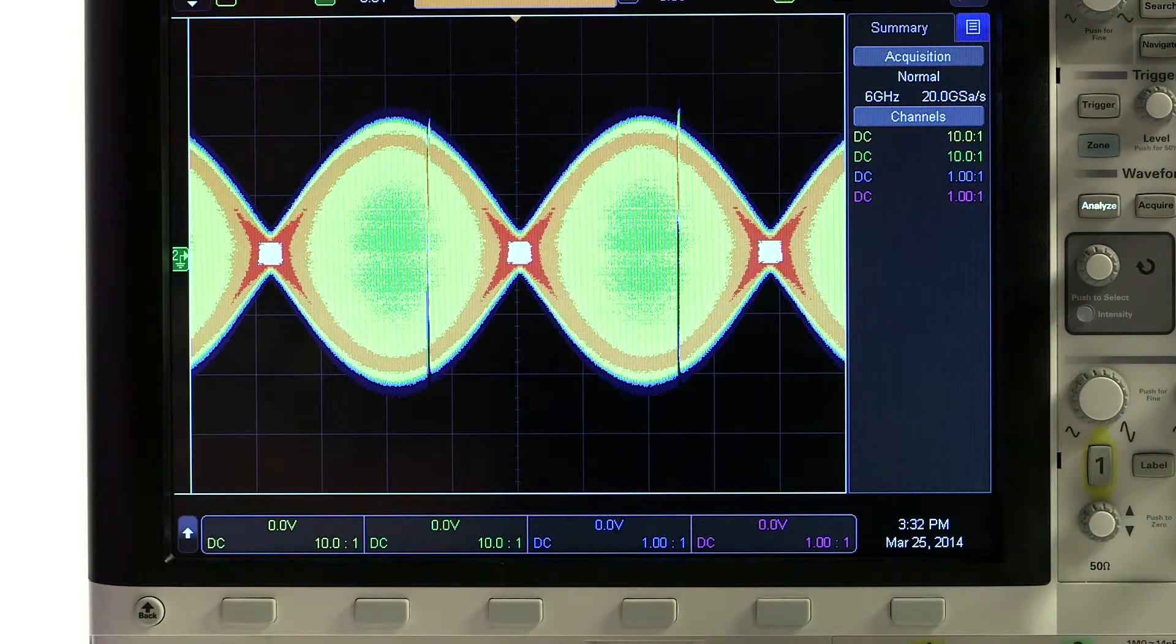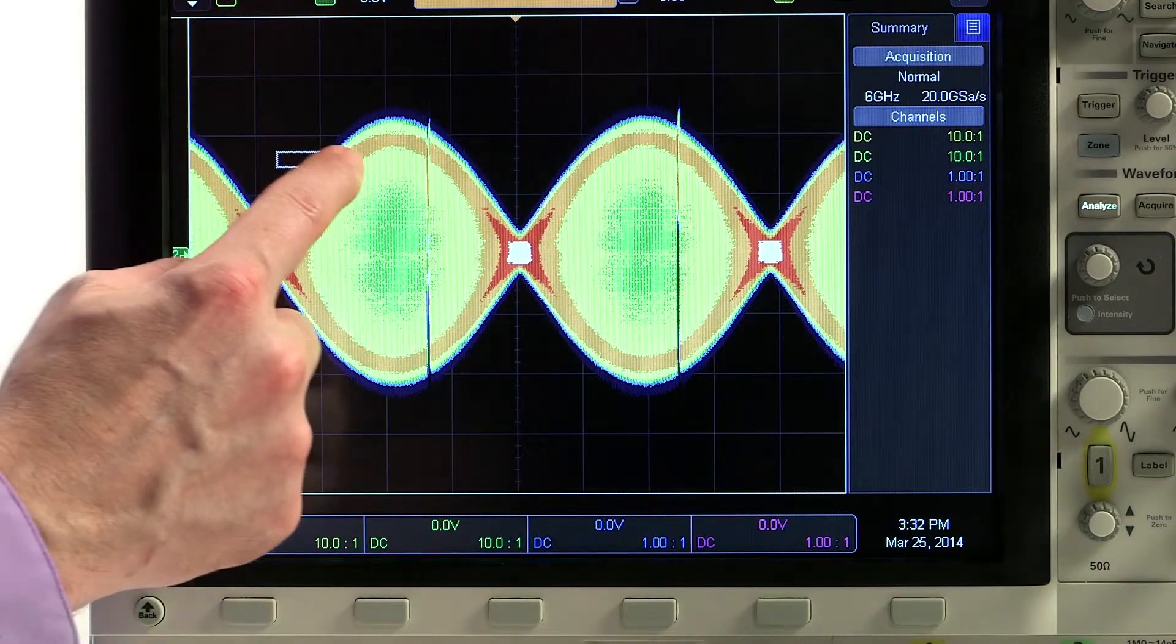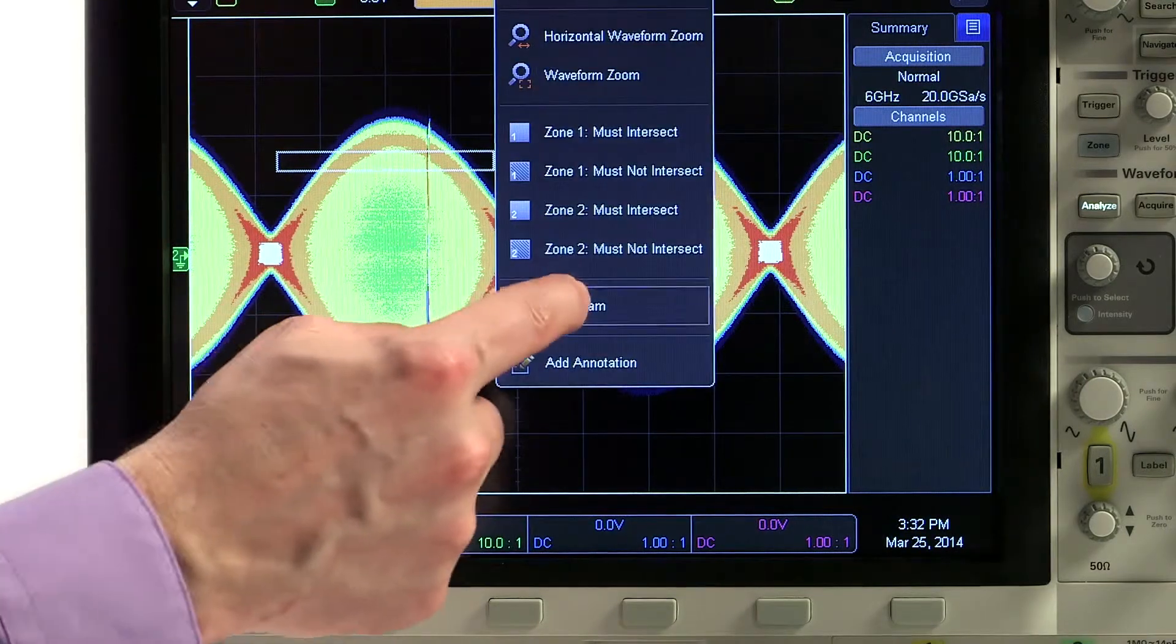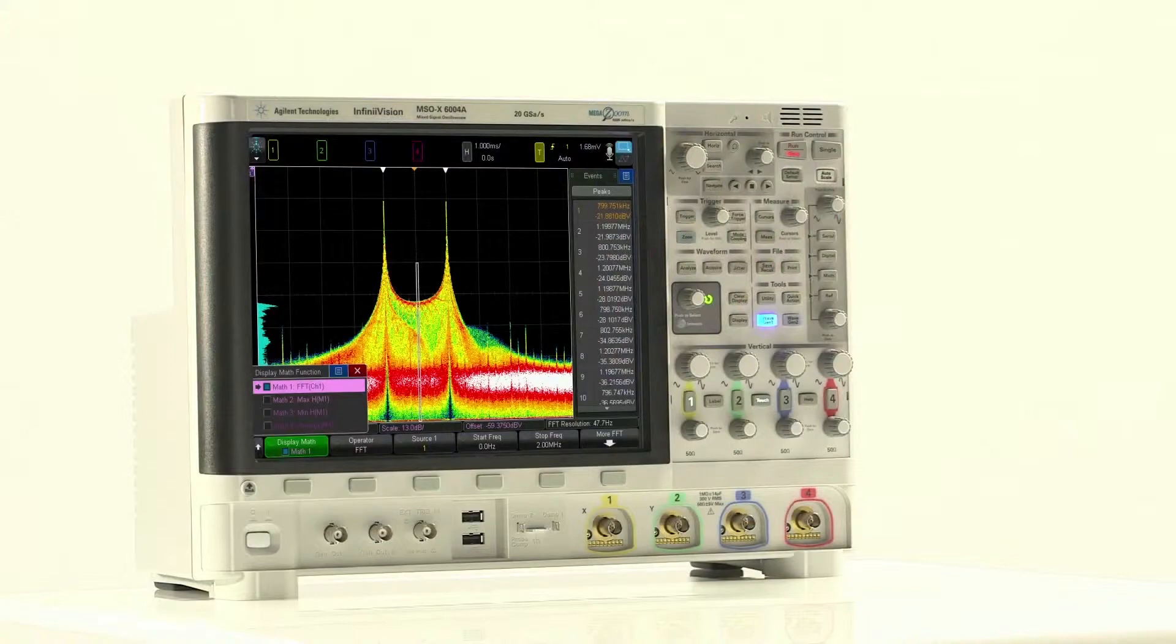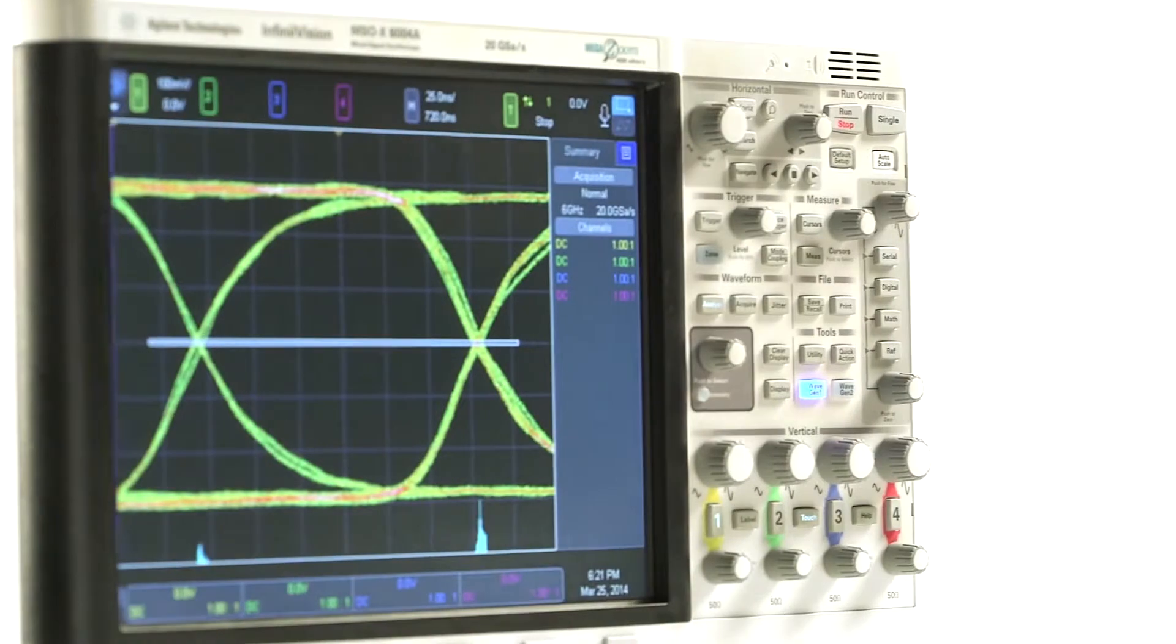In addition, you can visualize the distribution using color grade and histograms. For the first time in an embedded OS scope, the 6000X-Series can color grade and histogram analog channel waveforms or math functions.